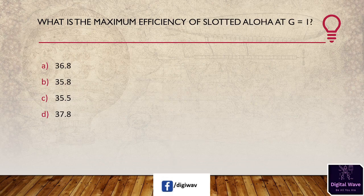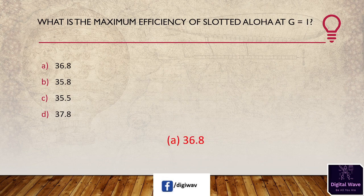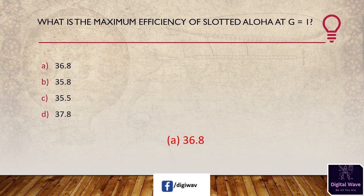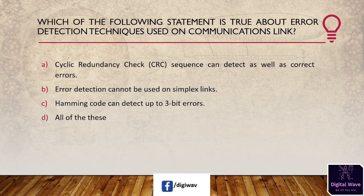Next question: what is the maximum efficiency of slotted ALOHA at G = 1? Options are: 36.8%, 35.8%, 35.5%, and 37.8%. The answer is 36.8%. The maximum efficiency of slotted ALOHA uses the formula G × e^(−G). With G = 1, we compute 1 × e^(−1) = 1/e ≈ 0.368, so the answer is 36.8%.